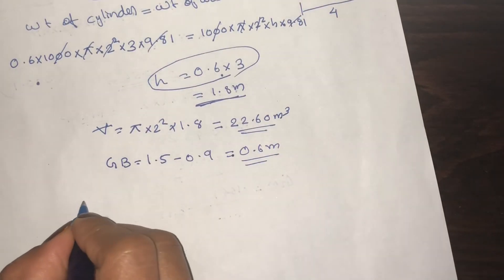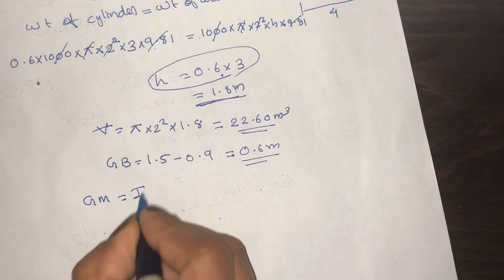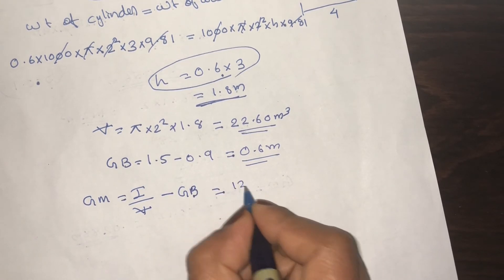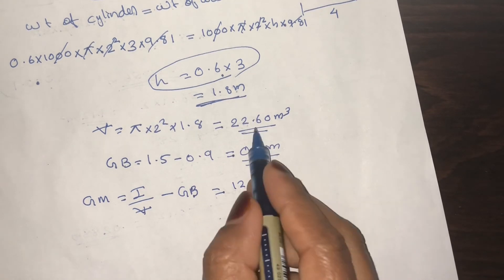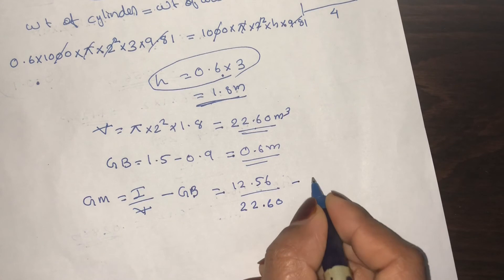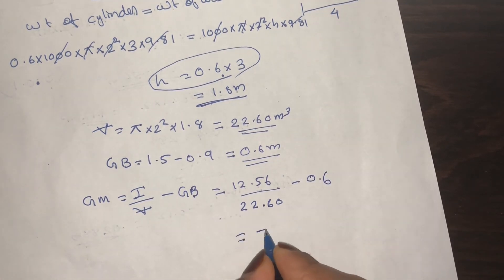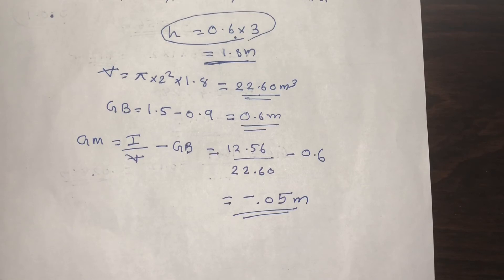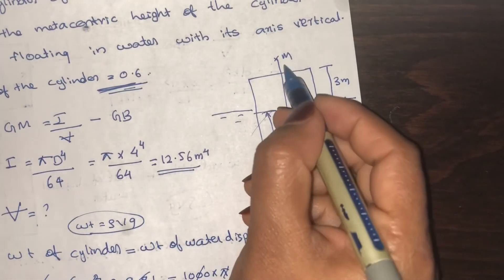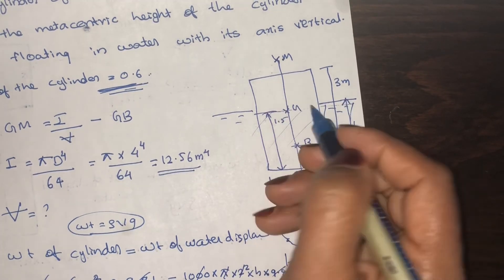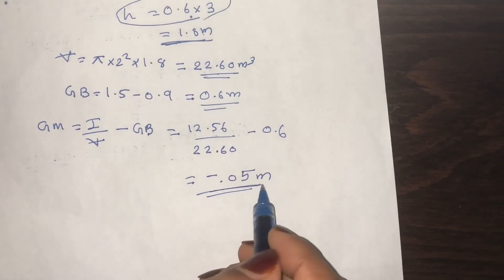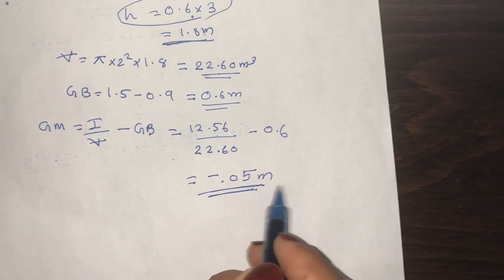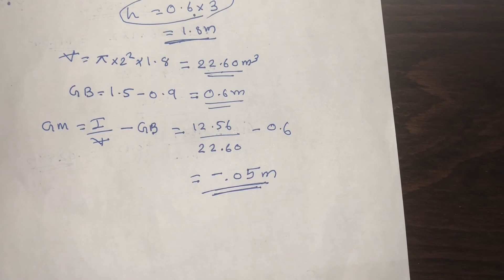Substituting all the data: GM equals I divided by immersed volume minus GB, equal to 12.56 divided by 22.60 minus 0.6, giving minus 0.05 meter. The negative sign means the metacenter is below the center of gravity of the body, so the cylinder is unstable.